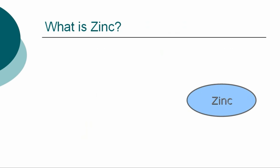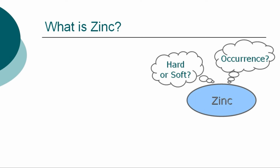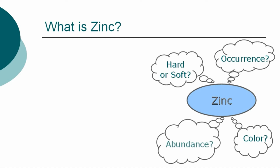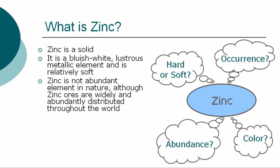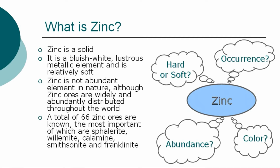What is zinc? In a general overview of the element, we can first describe zinc as a solid. It is a bluish-white, lustrous, metallic element which is relatively soft. Zinc is not abundant in nature, although zinc ores are widely and abundantly distributed throughout the world. A total of 66 zinc ores are known, the most important of which are sphalerite, willemite, calamine, smithsonite, and franklinite.